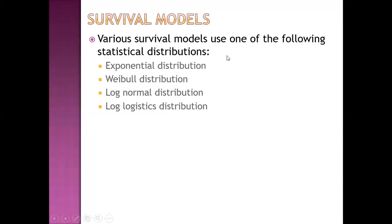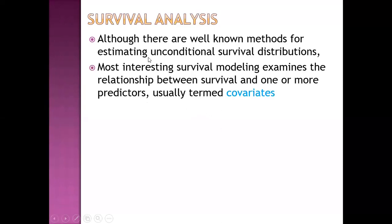Various survival models use one of the following statistical distributions: either exponential distribution, which is the most commonly used memoryless distribution, or Weibull distribution, most commonly used in engineering and machine failure analysis. Other distributions include log-normal and log-logistic distribution. Most interesting survival modeling examines the relationship between survival and one or more predictors, known as covariates.